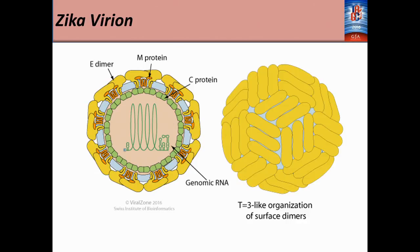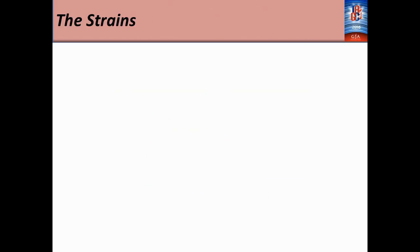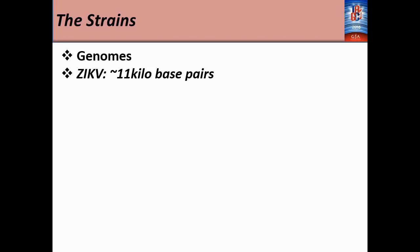We have the Zika virion here. We are showing the three structural proteins in Zika virus: the E-dimer, the M-protein, and the C-protein. That also shows the genomic RNA for Zika, and this shows us the Zika genome.